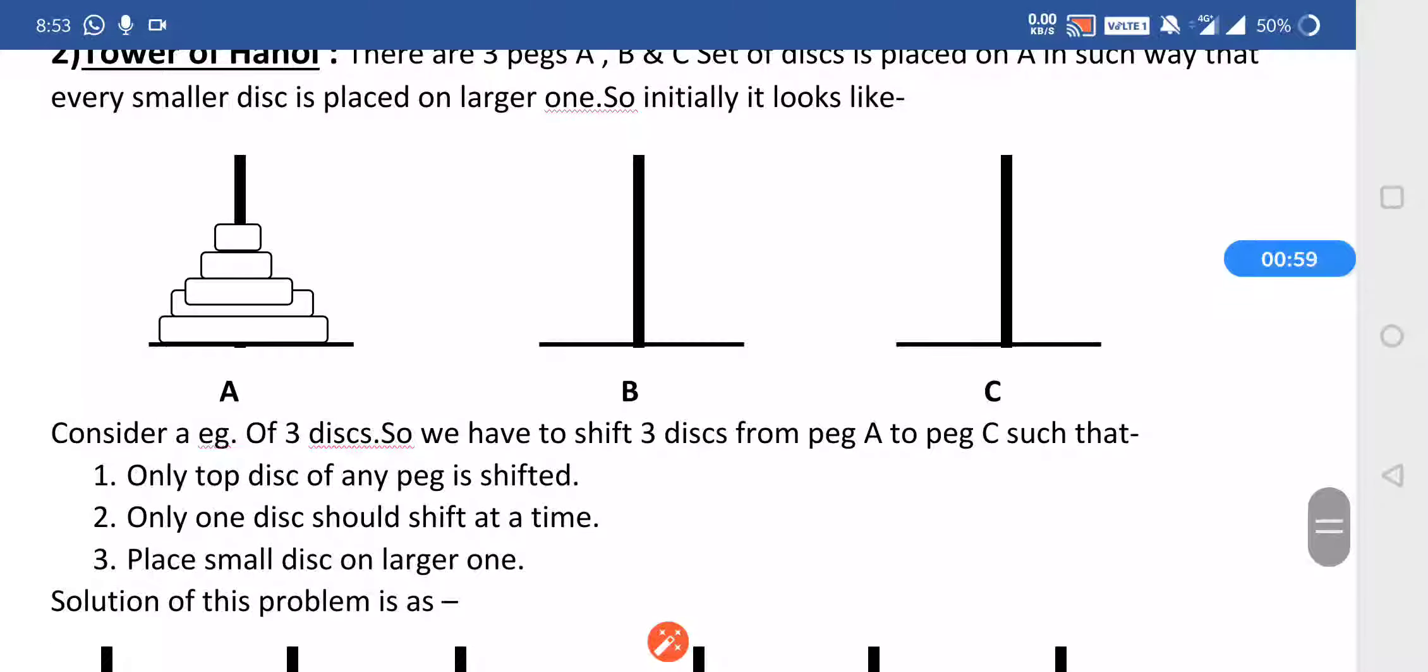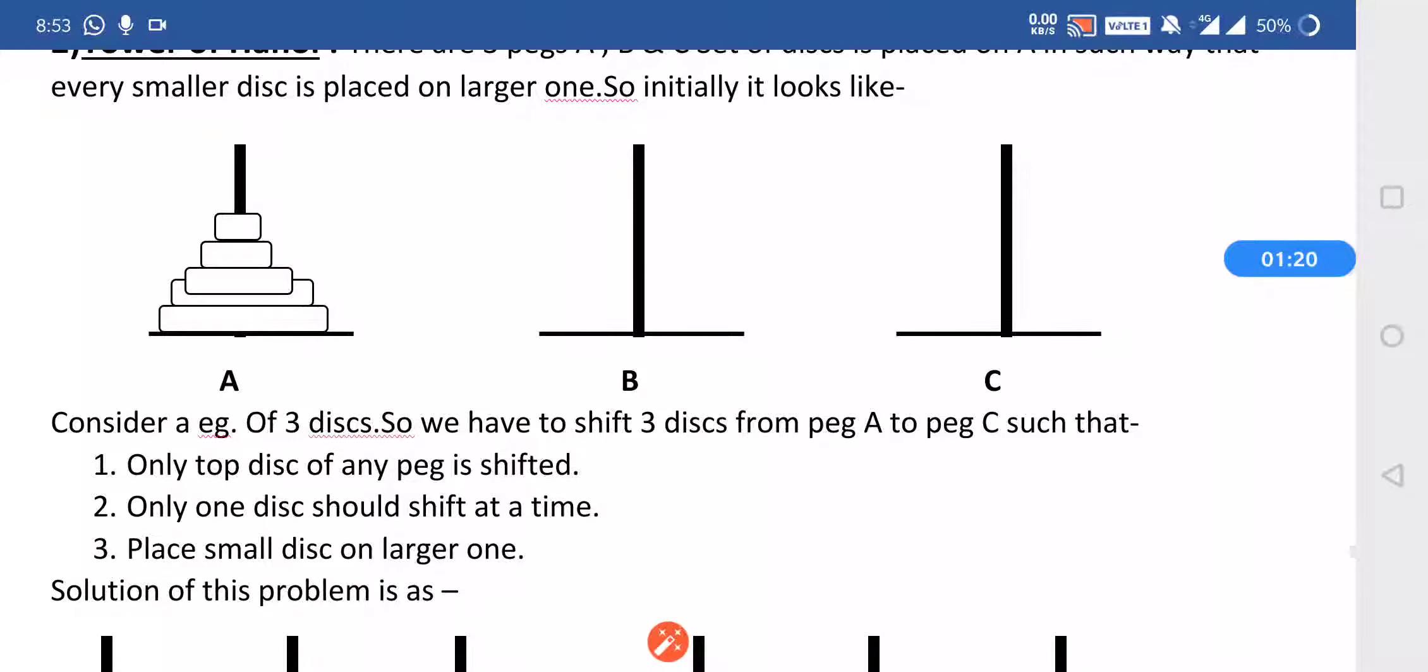There are basic rules when we are playing Tower of Hanoi. What are the steps? Whenever we want to move the disks from peg A to peg C, keep in mind, only the top disk of a peg is shifted. This is our first rule: we can shift only the first or top disk which is available in the tower or peg.